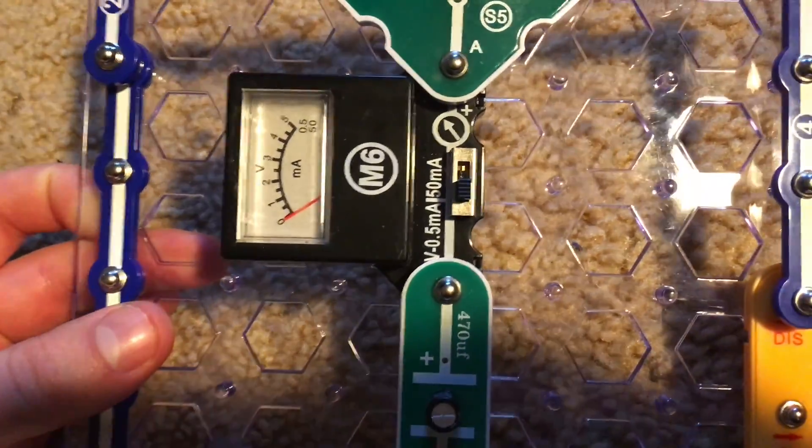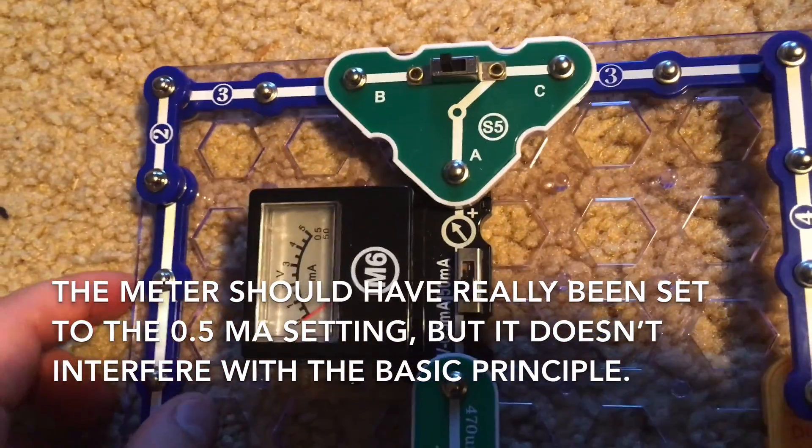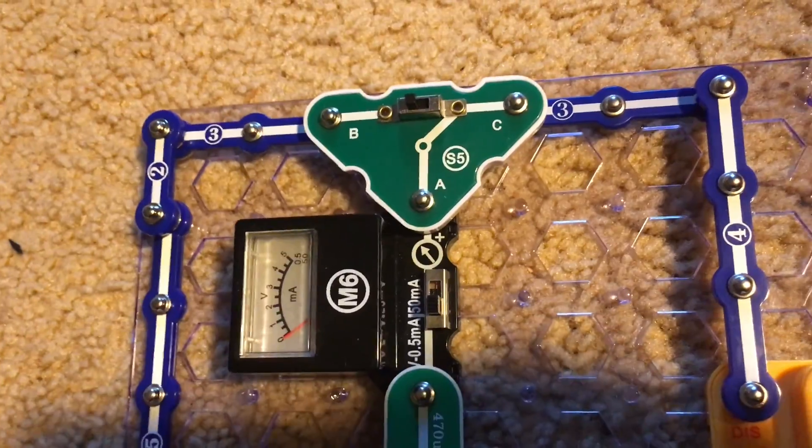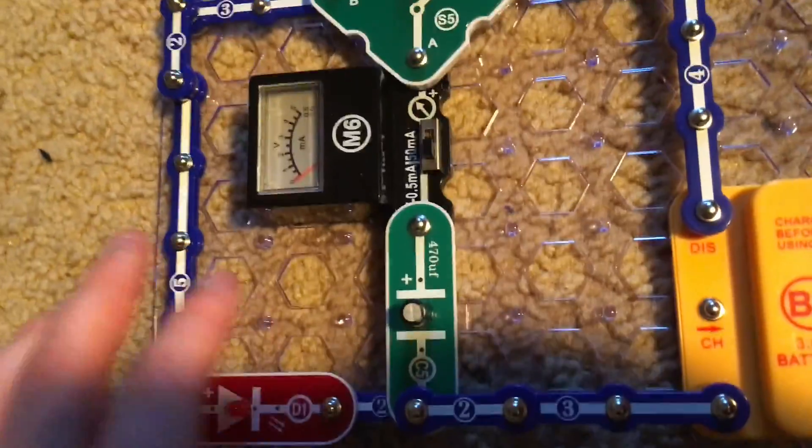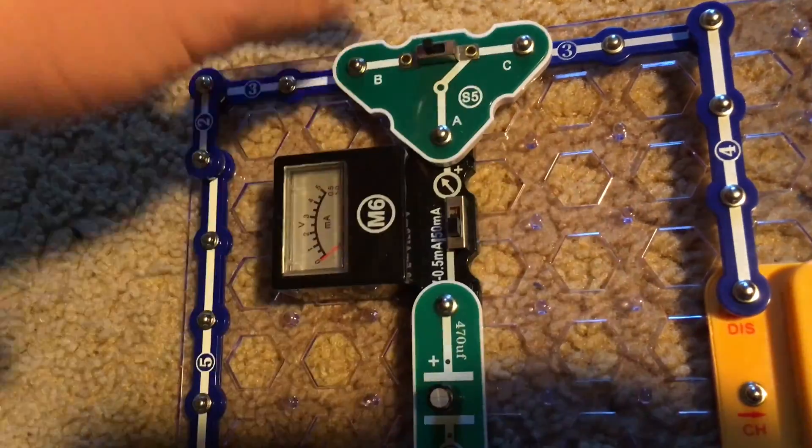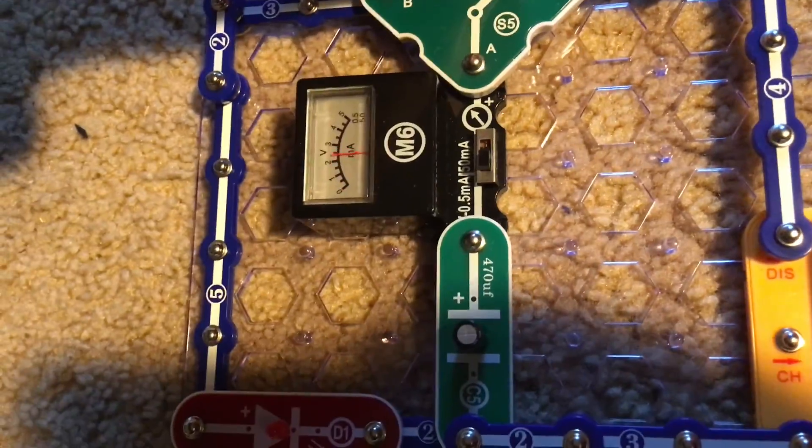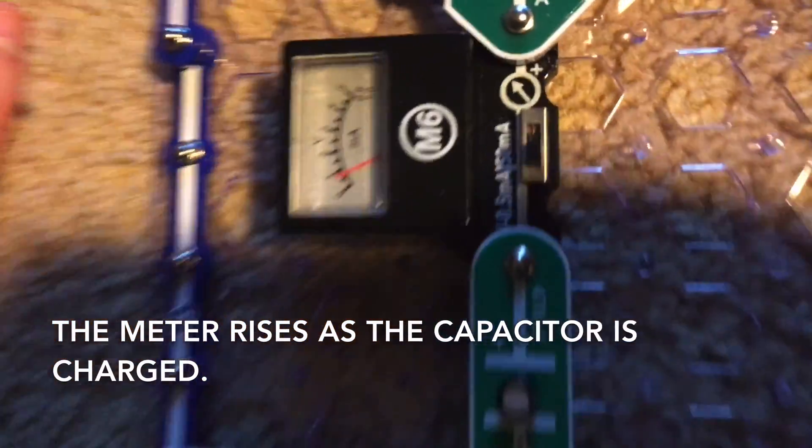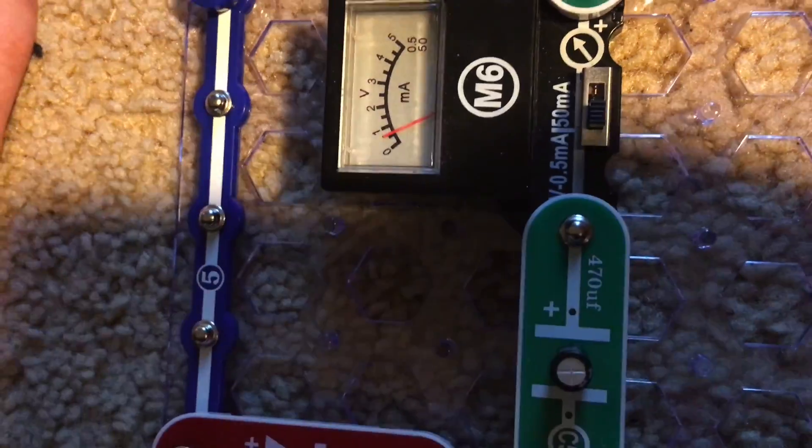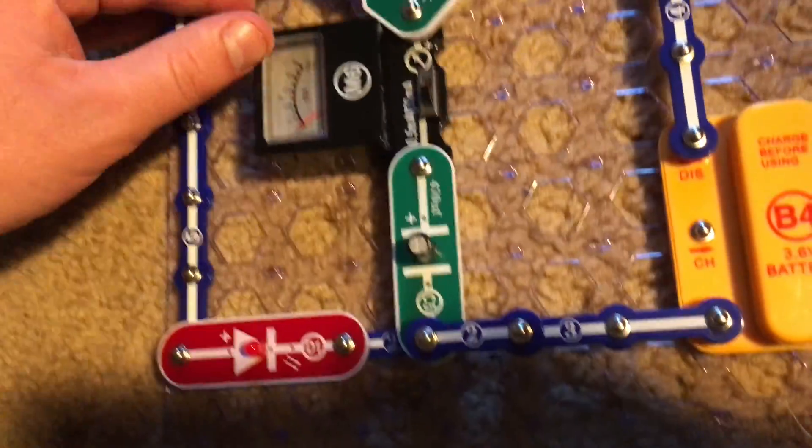With this circuit we'll have the voltage meter set to the 5 volt setting and we'll start with the slide switch in the B or left position. We're going to move the switch over to position C and watch the voltage meter. The meter shoots up to just above 2 volts while it resets. The capacitor has been charged.